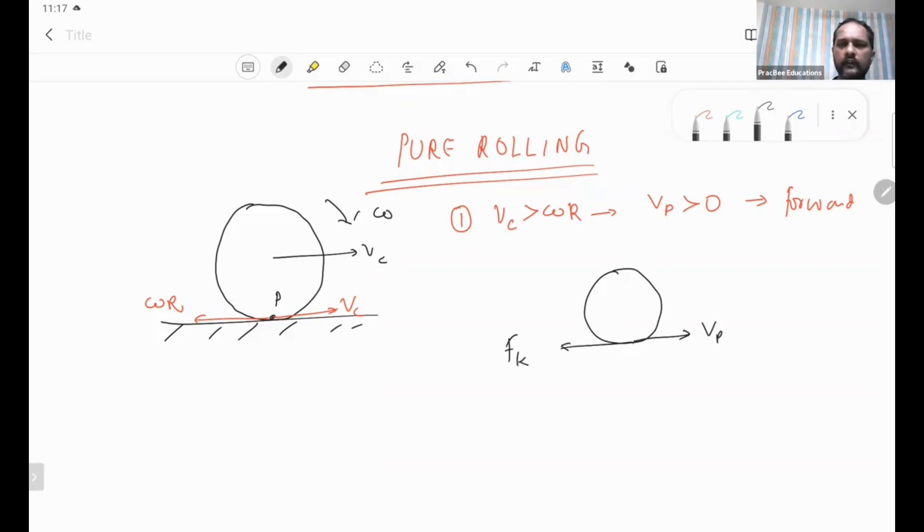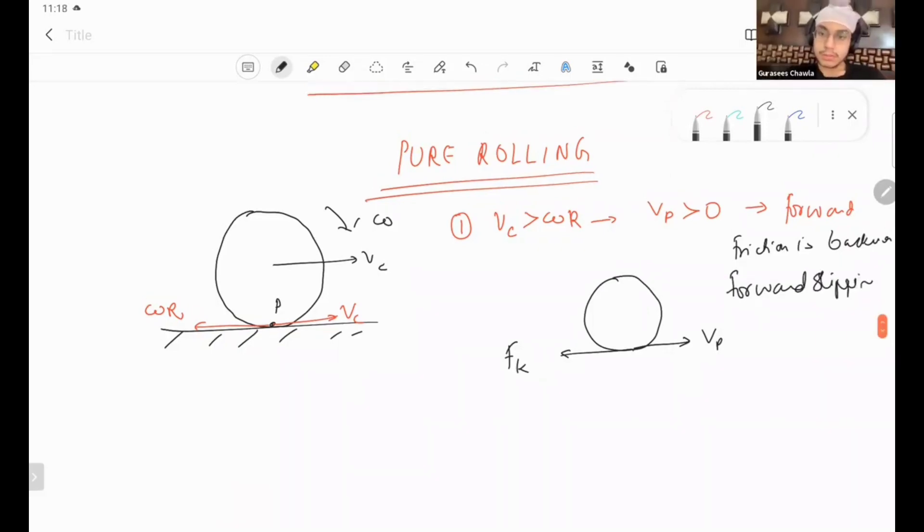We have backward friction for forward slipping. I give this name forward slipping or skidding forward, slipping with skidding. Basically the point of contact has kinetic friction, so a lot of heat will be generated there and there will be wear and tear of that part at the bottom point.